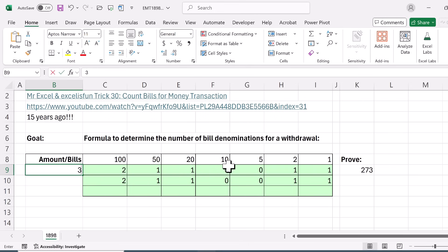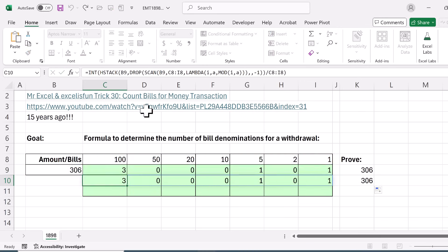If I change this to 306, works like a charm. And I can copy this down and check. And sure enough, old school, or new school, or 15 years ago, or today, it's all fun determining the number of bill denominations. All right, we'll see you next XL Magic Trick.